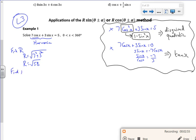So to find alpha, tan α is the second number over the first number. So the inverse tan of 3/7 is 23.2 degrees off the calculator.